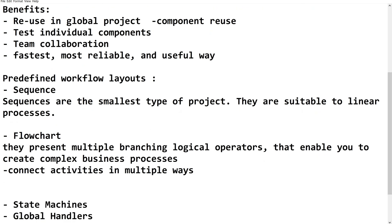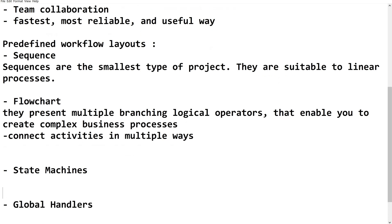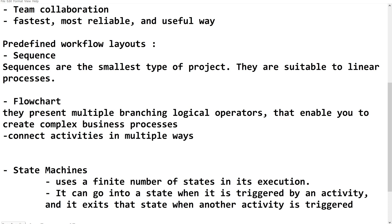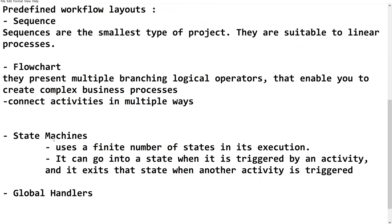State Machines are similar in some ways but use a finite number of states in their execution. It can go into a state when triggered by one activity, and it exits that state when another activity is triggered. We have covered state machines, flowcharts, and sequences in depth in other videos. On a high level, remember it as an automation that uses a finite number of states, triggered and exited by activities. Real-time scenarios will be covered, and at the end of this session I'll show you how it looks.